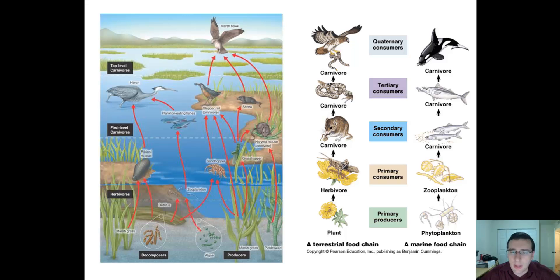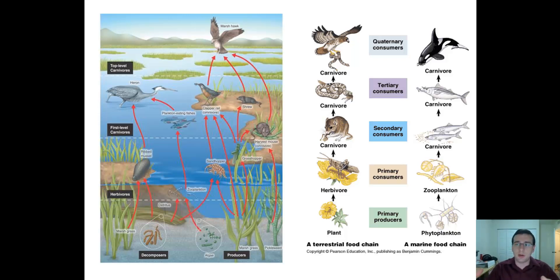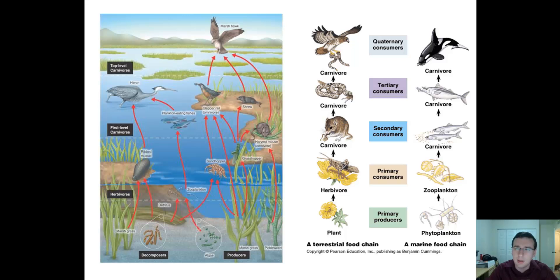Removing the top predator can actually sometimes increase the diversity of the ecosystem, at least in the short run, because it opens up the niche at the top for new predators to take its place. The prey, which is no longer under pressure from the predator, can expand into new niches it wasn't going into before. Predator-prey relationships sometimes help establish specialized niches, but without the predator, the prey is free to diversify as much as possible.